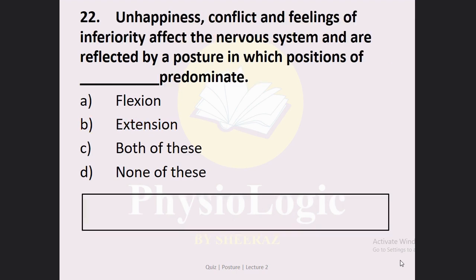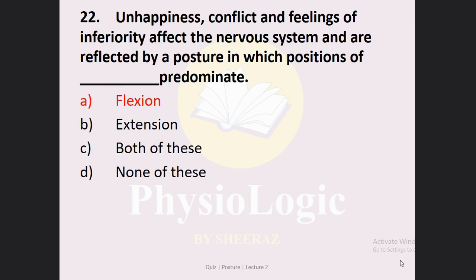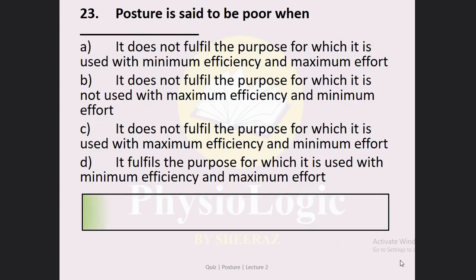Similar MCQ: Unhappiness, conflict, and feelings of inferiority affect the nervous system and are reflected by a posture in which positions of dash predominate. Option A: flexion. Option B: extension. Option C: both of these. Option D: none of these. The correct answer is Option A: flexion — when we are unhappy, have feelings of conflict or inferiority, the flexion movement of our body predominates.